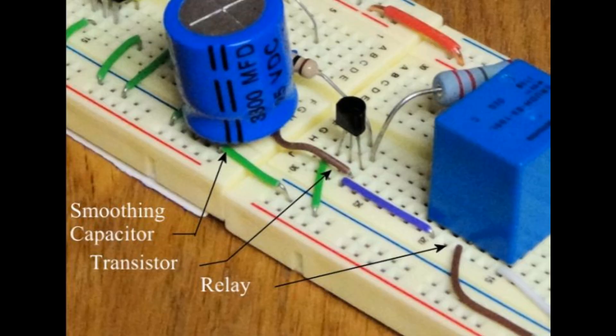The output of the 555 chip is fed into the base of an NPN 2N222 transistor. This transistor drives the relay.